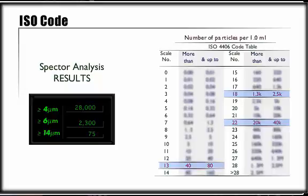The third number, 13, indicates the number of particles greater than or equal to 14 micron in size is more than 40 or less than or equal to 80 per milliliter. This ISO code is meaningful only if we can relate it to the required cleanliness level of our hydraulic system.